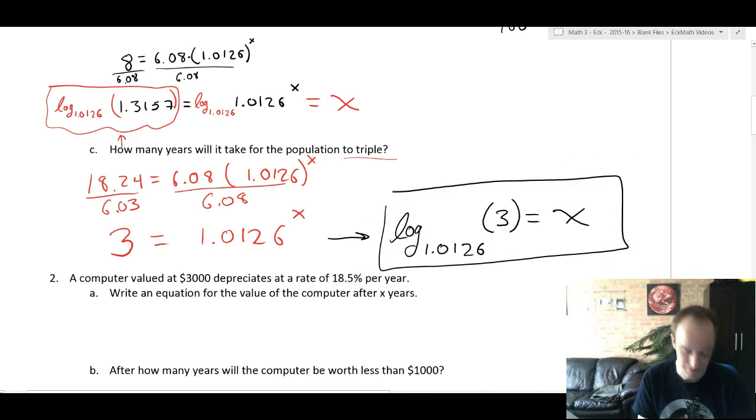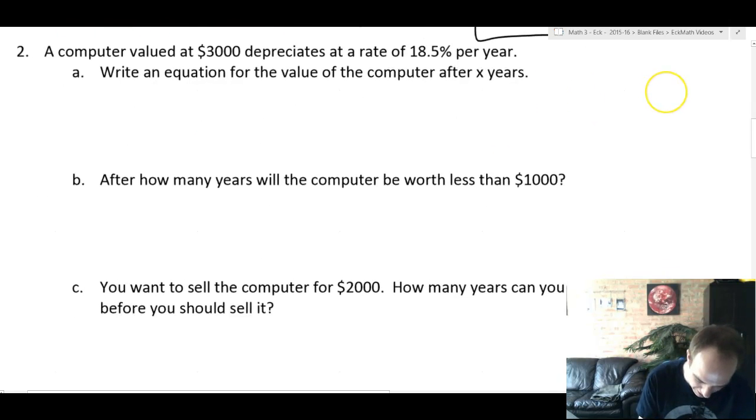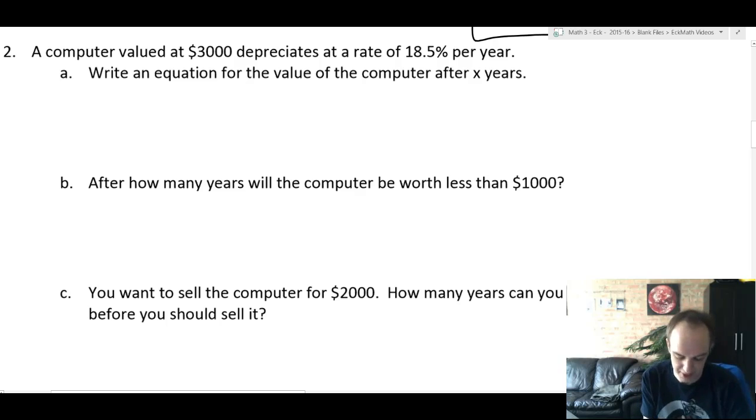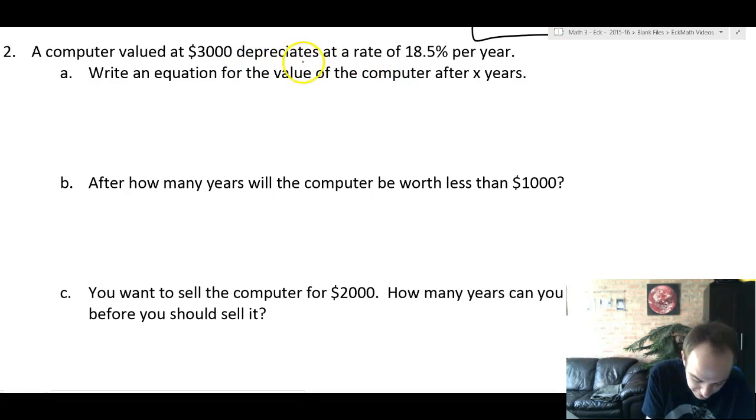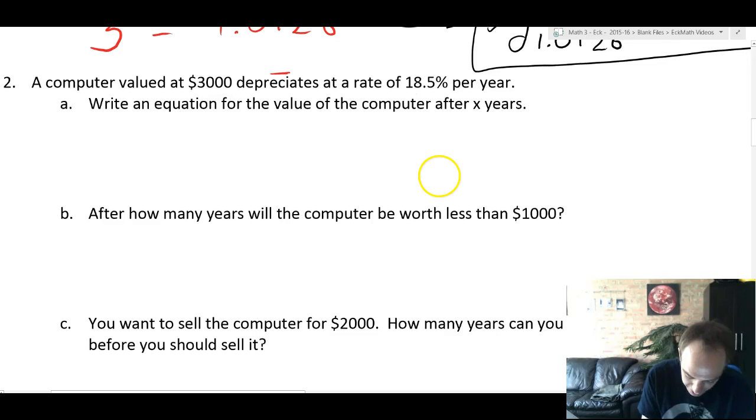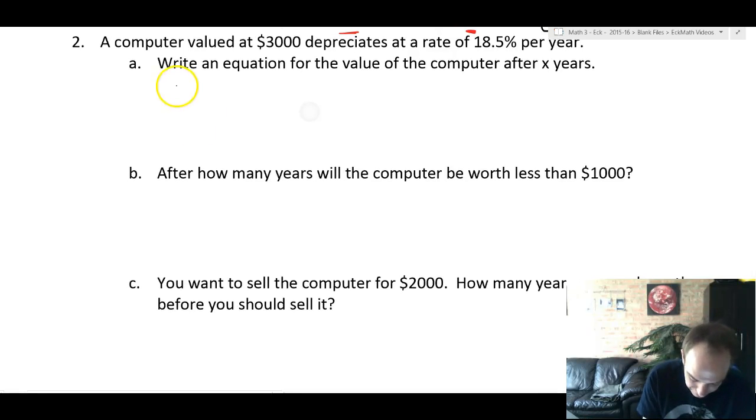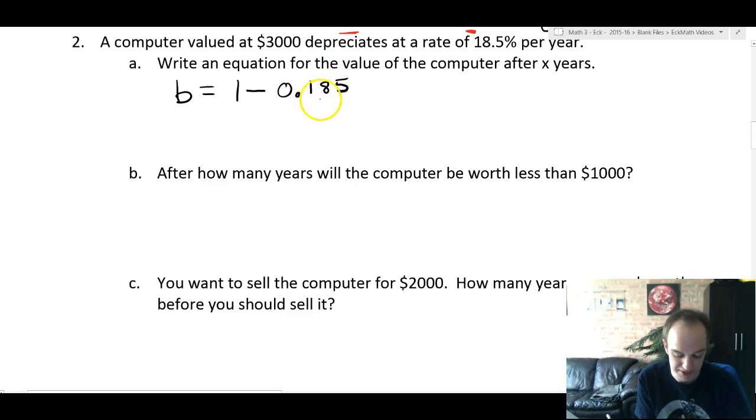Next problem. A computer valued at $3,000 depreciates at a rate of 18.5% per year. Write a value for the equation of the computer. Depreciate means losing value. So 18.5 percent is like negative 18.5 percent. So we're gonna need to find the b value, the base of the exponential equation, by doing 1 minus 0.185. That's 18.5 percent as a decimal. And that's gonna equal 0.815.